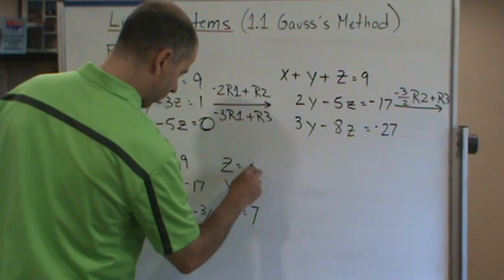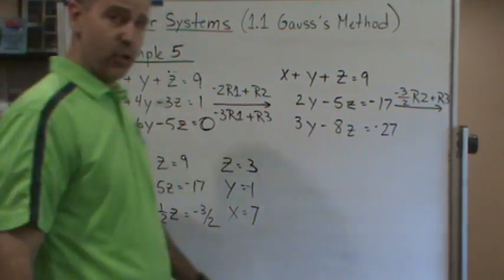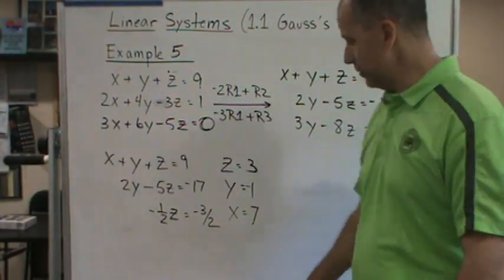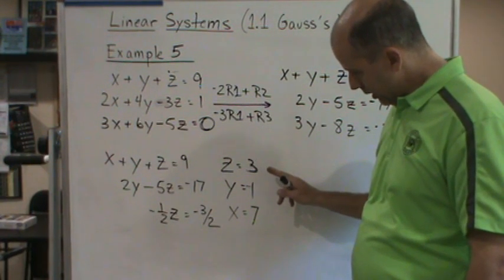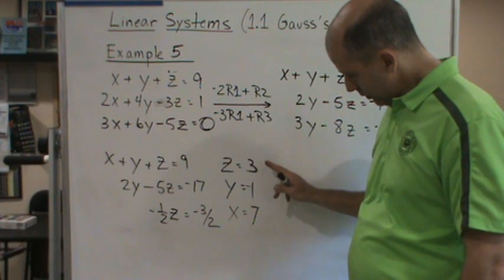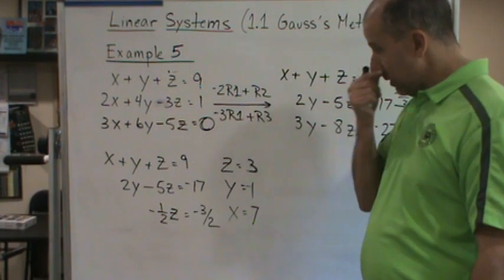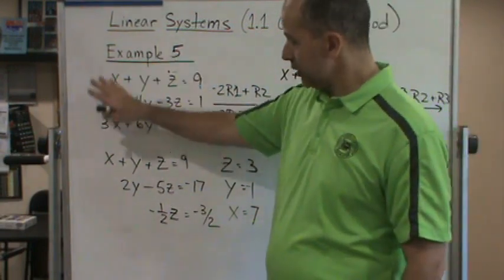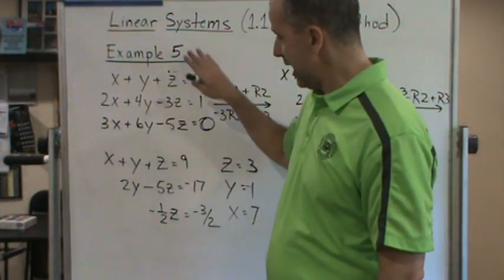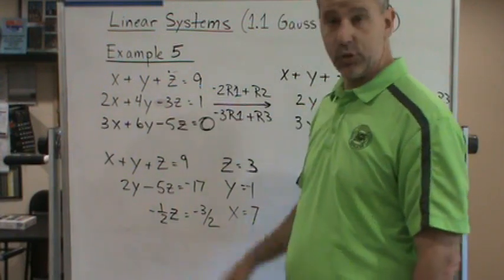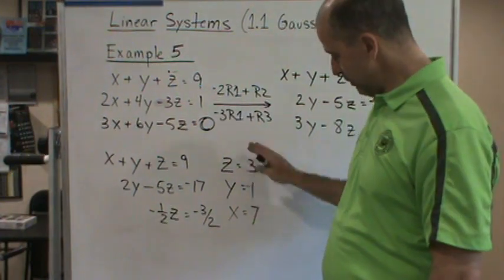Always check your work. This brings up a great point: whenever you get a solution, check your answer by plugging it back into the original equations. If I had kept x equals 5, y equals 1, z equals 3 and plugged those back in, I would have found a false statement and caught the error. I caught myself here — the correct solution is x equals 7, y equals negative 1, z equals 3.